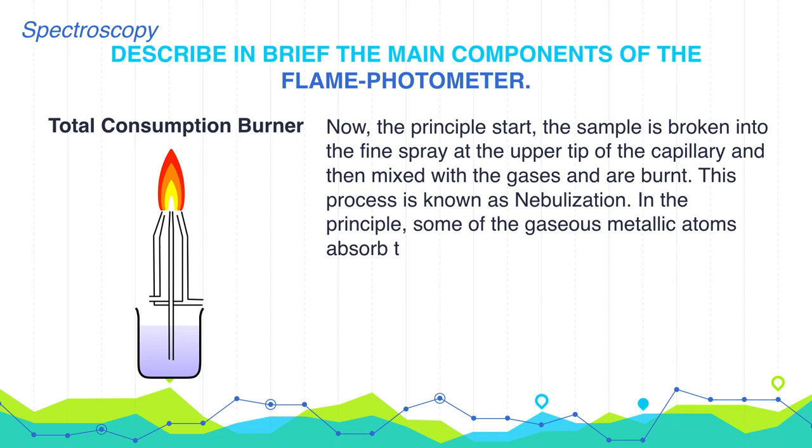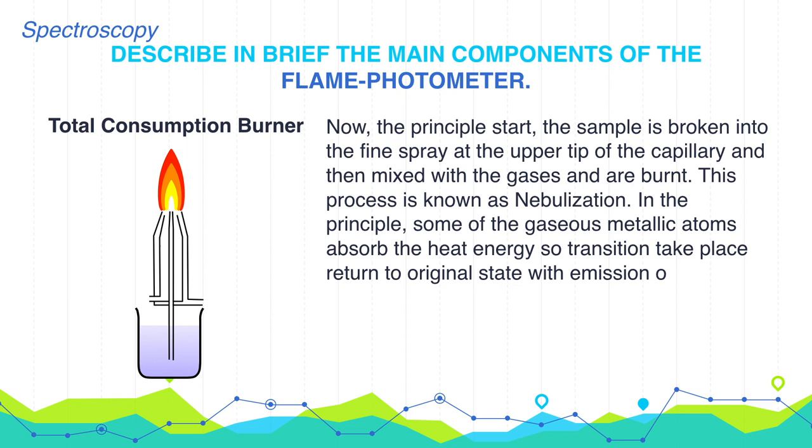Transition takes place from the ground state to the excited state. When the excited atoms return back to the ground state, they emit radiations.